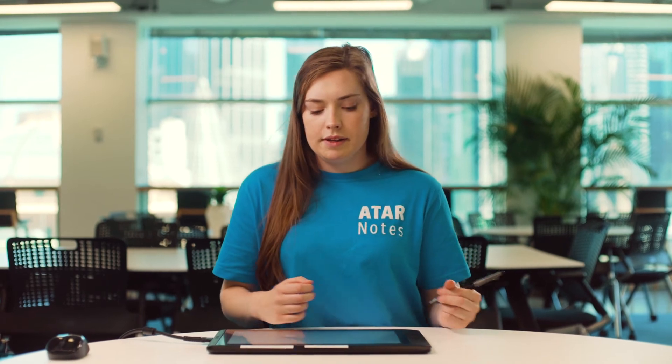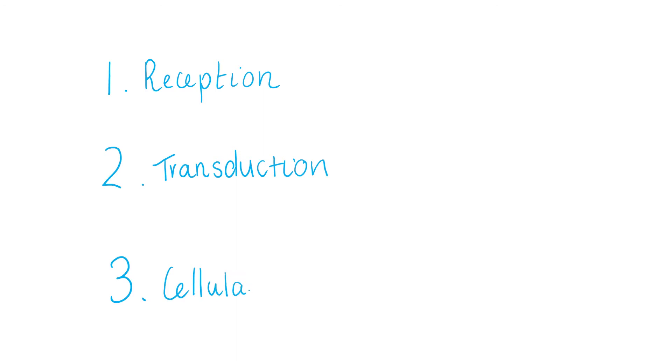The third step is the cellular response. The cellular response can be carried out when the effector molecules within the cell have been activated by the transduction process. The cellular response can be a variety of different things — for example, it could be a change in gene expression, which is quite common for hydrophobic signalling molecules, or it could even be cell movement. So there can be quite a range.